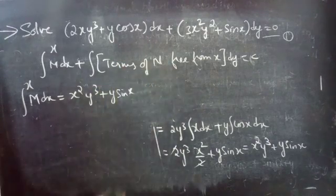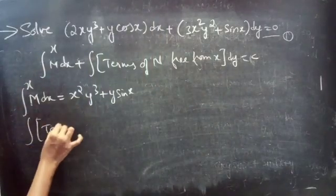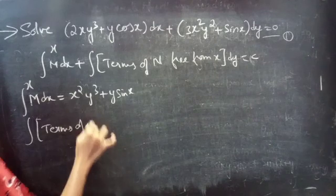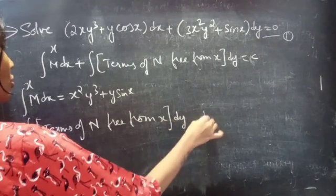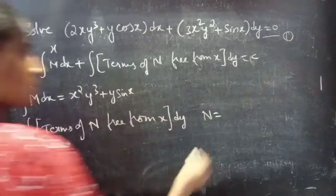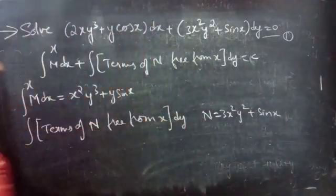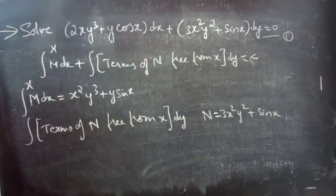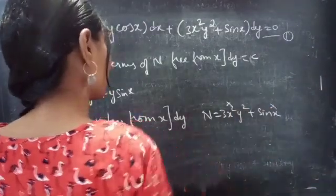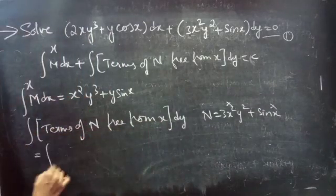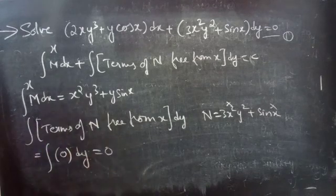Now for the second integral: integral of terms of N free from x dy. We have N equals to 3x²y² + sin x. Both terms contain x, so there is no term which is free from x. Therefore, the terms of N free from x equals to 0.